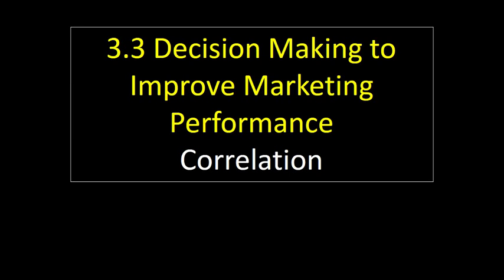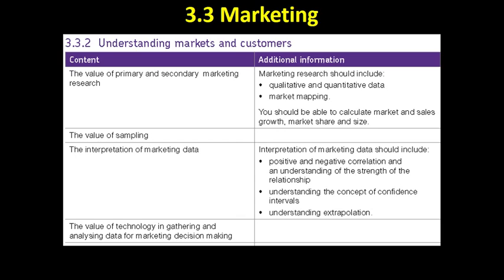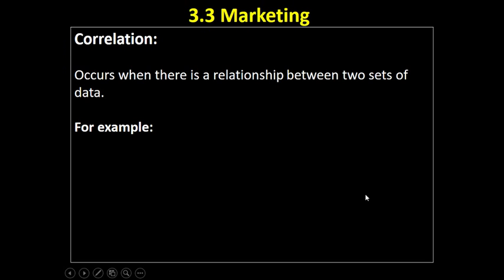In this video I'm going to go through correlation. Looking at section 3.3.2 of the specification, the business has now collected some primary and secondary market research — qualitative and quantitative data using a sample. Now that we've got some data, it's going to be important to interpret it, and that's what this section is all about. The first thing you need to know about is correlation, which occurs when there's a relationship between two sets of data.